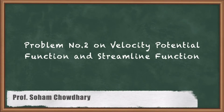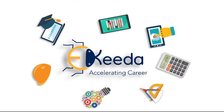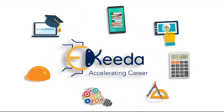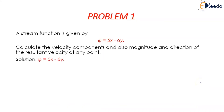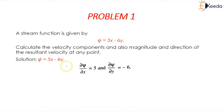Let's start with a new topic from the chapter fluid kinematics about problems associated with velocity potential function and stream function. Problem one states: a stream function is given by psi is equal to 5x minus 6y. Calculate the velocity components and also the magnitude and direction of the resultant velocity at any point. The function given is psi equals 5x minus 6y.